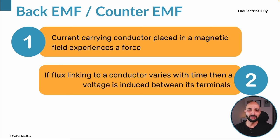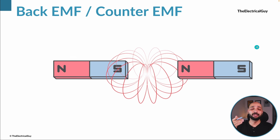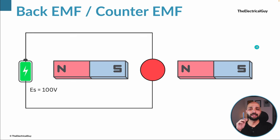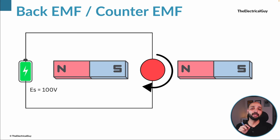Now let's talk about the DC motor. The basic construction of a DC motor consists of two magnets — permanent or electromagnet — which generate the magnetic field. Inside this magnetic field we place the armature, which has different conductors, and we connect a supply voltage Es, let's say 100 volts. The moment we switch on the supply, the conductors inside the armature experience a force and the armature starts rotating.